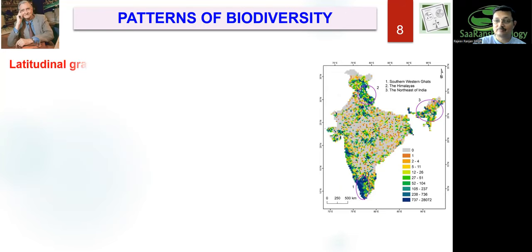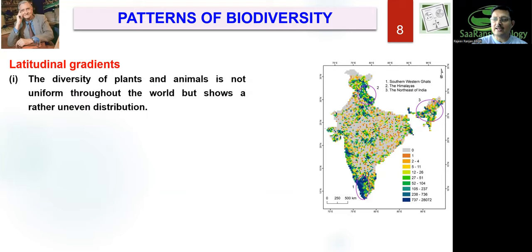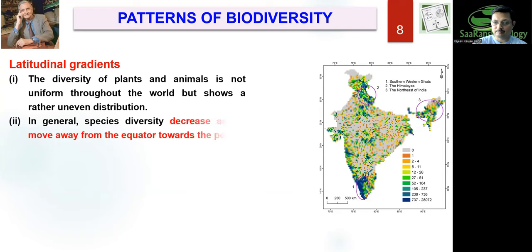Now let us see the patterns of biodiversity. Biodiversity changes with latitudinal gradient. Moving from the equator through the Tropic of Cancer, Tropic of Capricorn, Arctic Circle, Antarctic Circle, to the North and South Poles — if you move from the equator towards the pole, species diversity will decrease.